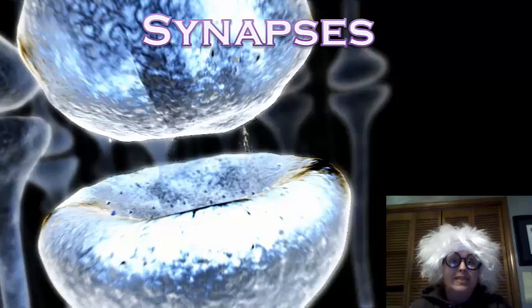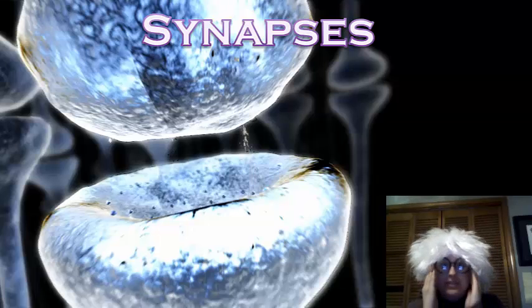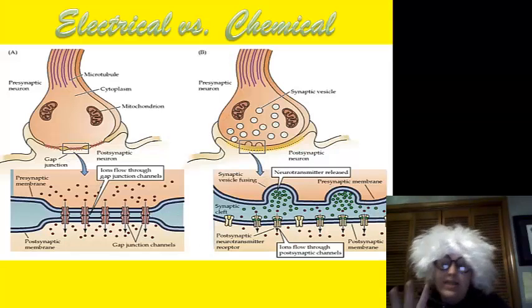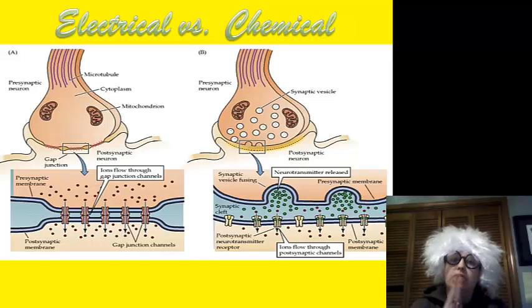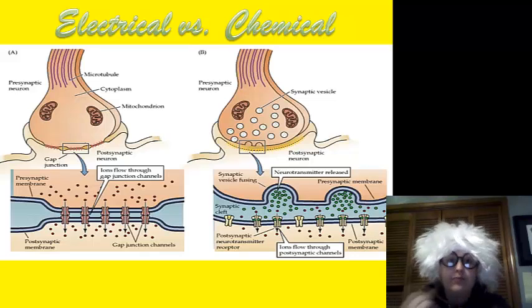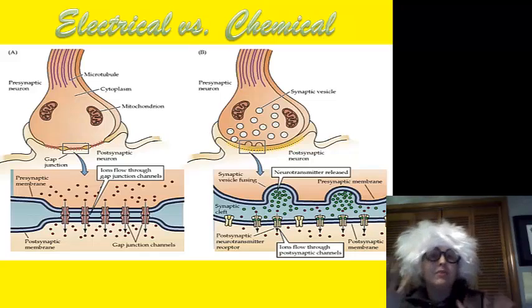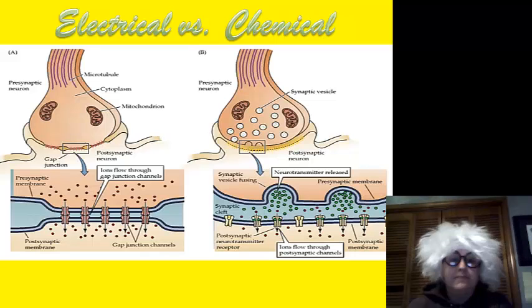Today we are going to be talking about synapses and our senses. A synapse is when we have the end of the nerve meeting another cell or another nerve. There are two types: we have electrical synapses and then we have chemical synapses.